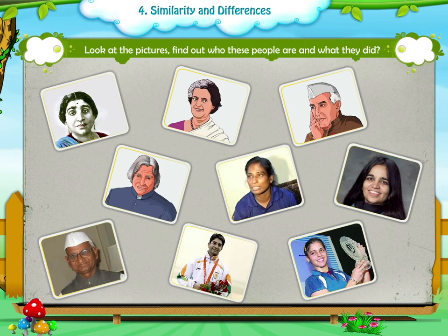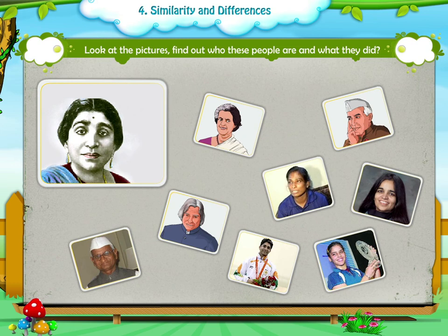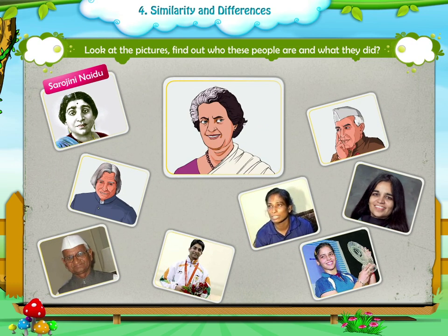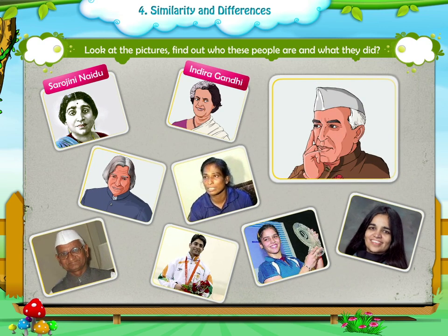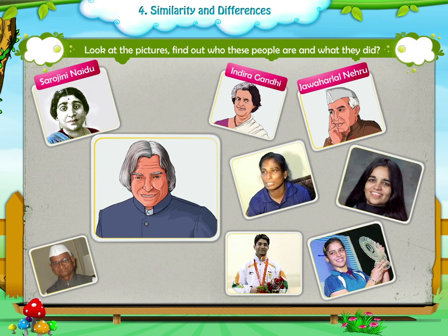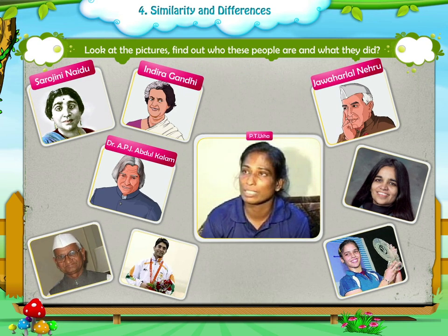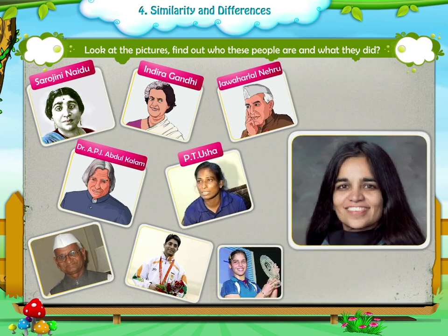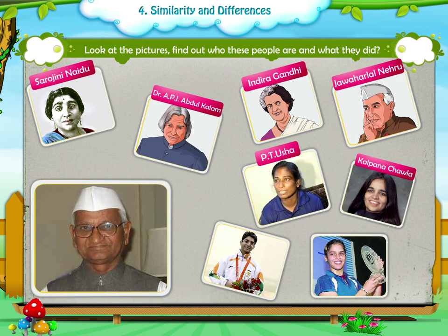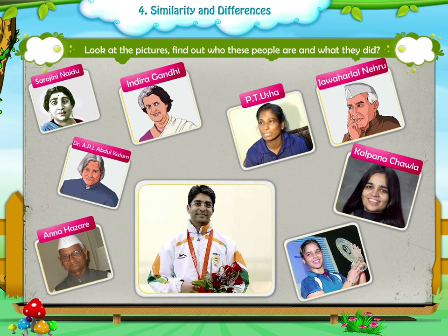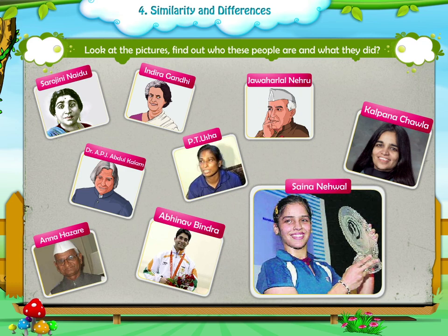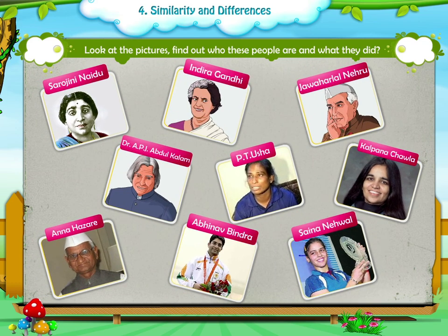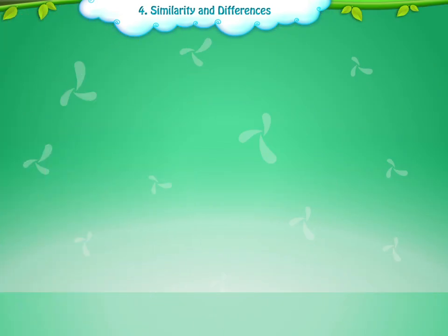Look at the pictures, find out who these people are and what they did. Sarojini Naidu, Indira Gandhi, Jawaharlal Nehru, Dr. A.P.J. Abdul Kalam, P.T. Usha, Kalpana Chawla, Anna Hazare, Abhinav Bindra, Saina Nehwal.